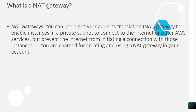Question 4: What is a NAT gateway? You can use a Network Address Translation (NAT) gateway to enable instances in a private subnet to connect to the internet or other AWS services, but prevent the internet from initiating a connection with those instances. You are charged for creating and using a NAT gateway in your account.